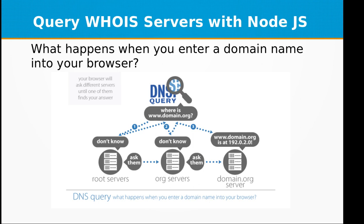Then the request is forwarded to the third-party domain.org server, which has the matching result and says 'Yes, I found it — it is located at 192.0.2.0.' This is the IP address of the actual machine which holds the website, your web server. This is the whole process of a DNS query.